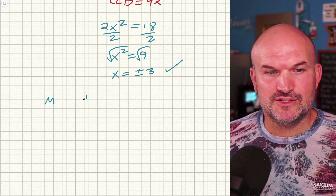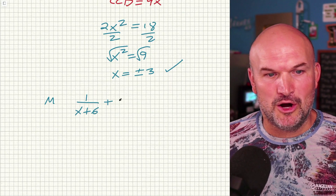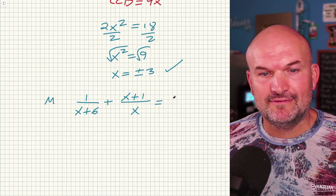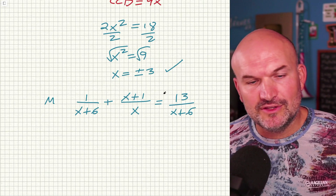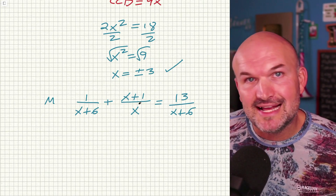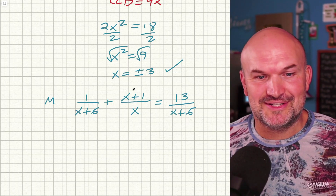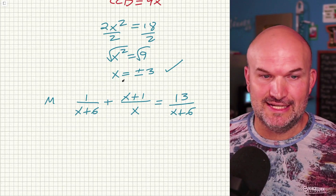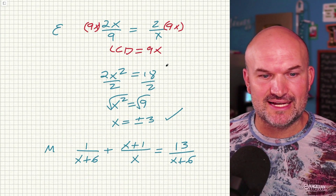Now let's look at the medium example where students will say let's use cross multiplication and get it all wrong. Cross multiplication only works when you have a proportion — a ratio equal to a ratio. It's great for those, but don't try to use it here because it's not going to work. So again, what I want you to focus on is identifying the LCD. The LCD was rather simple in the last one — just nine times X. Over here we need to think about what X plus six and X each divide into.